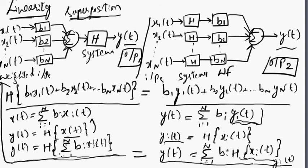Let us define it again. A system is said to be linear when the response to a weighted sum of inputs is equal to the same weighted sum of outputs, where each output is associated with its corresponding input. Then such a system is said to be a linear system.